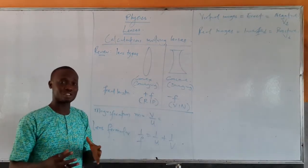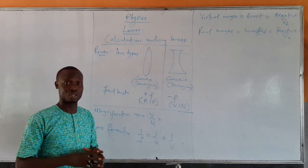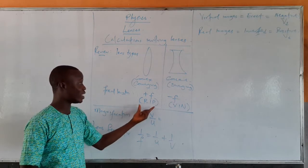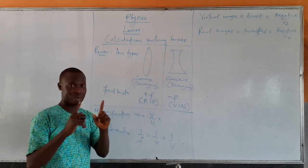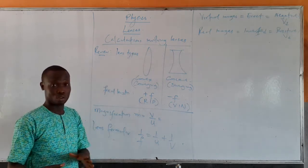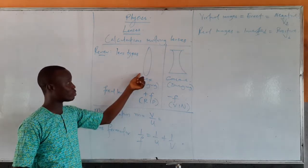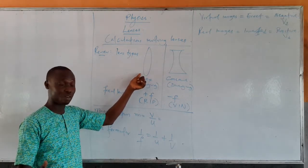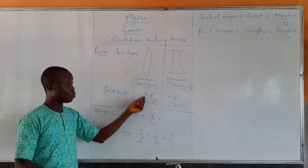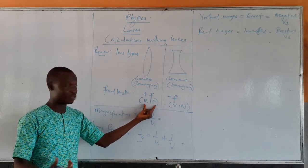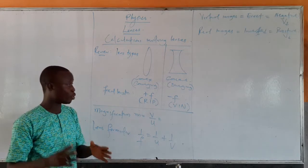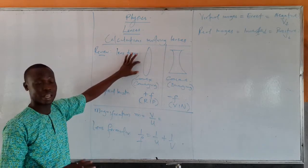This is synonymous with what we had under mirrors. If you check the previous videos on mirrors, the focal length for the concave mirror behaves like the convex lens — both are always positive. That is why I said RIP: the meaning of RIP means real is positive, and that is for the convex lens.